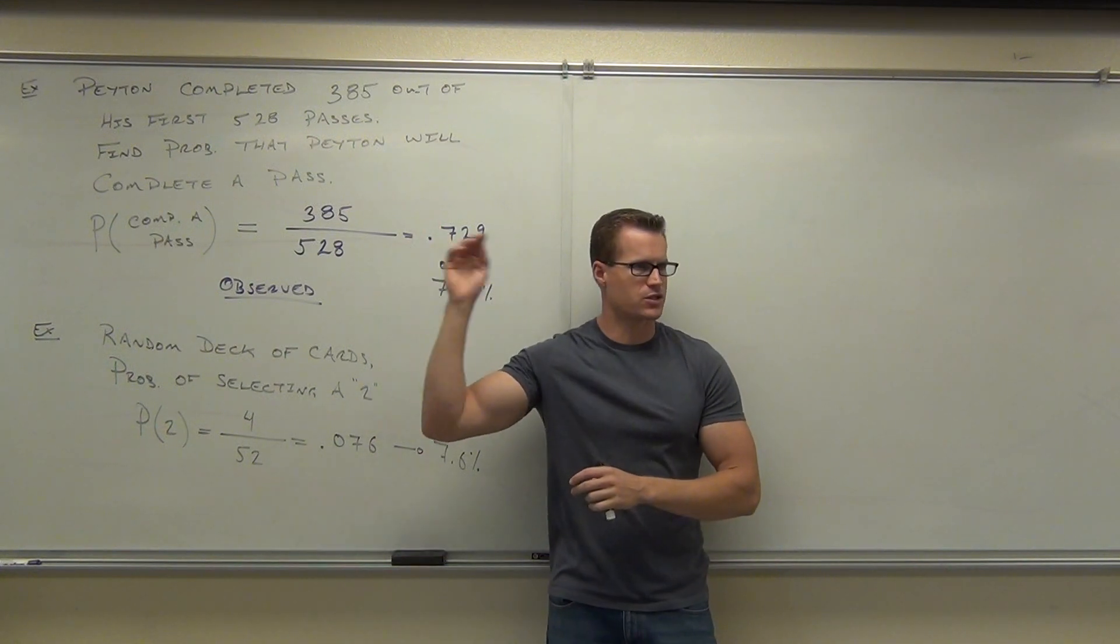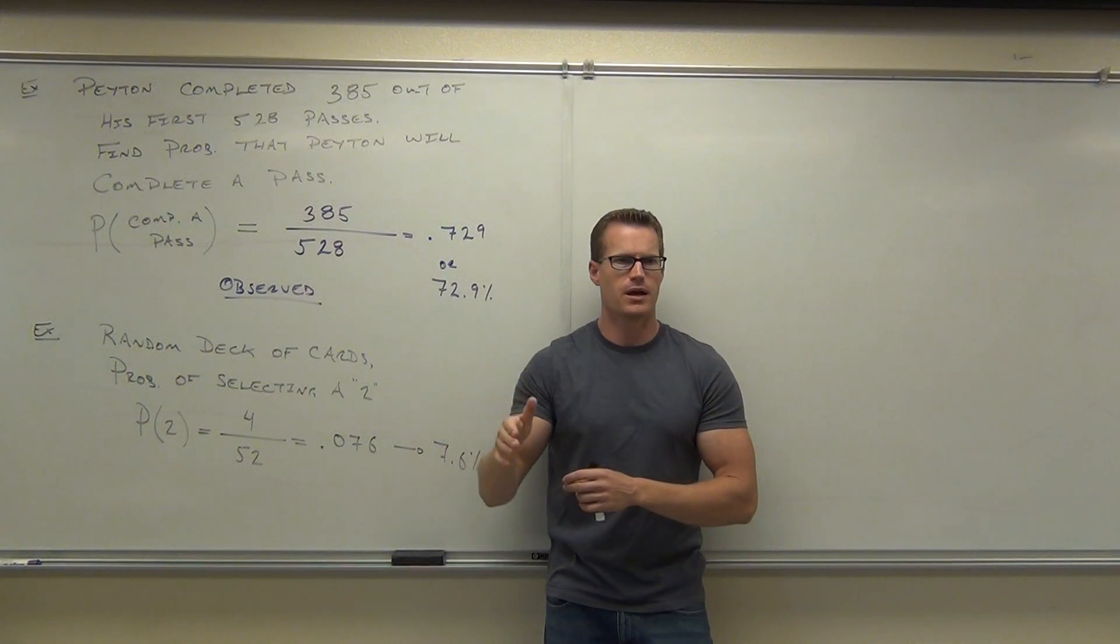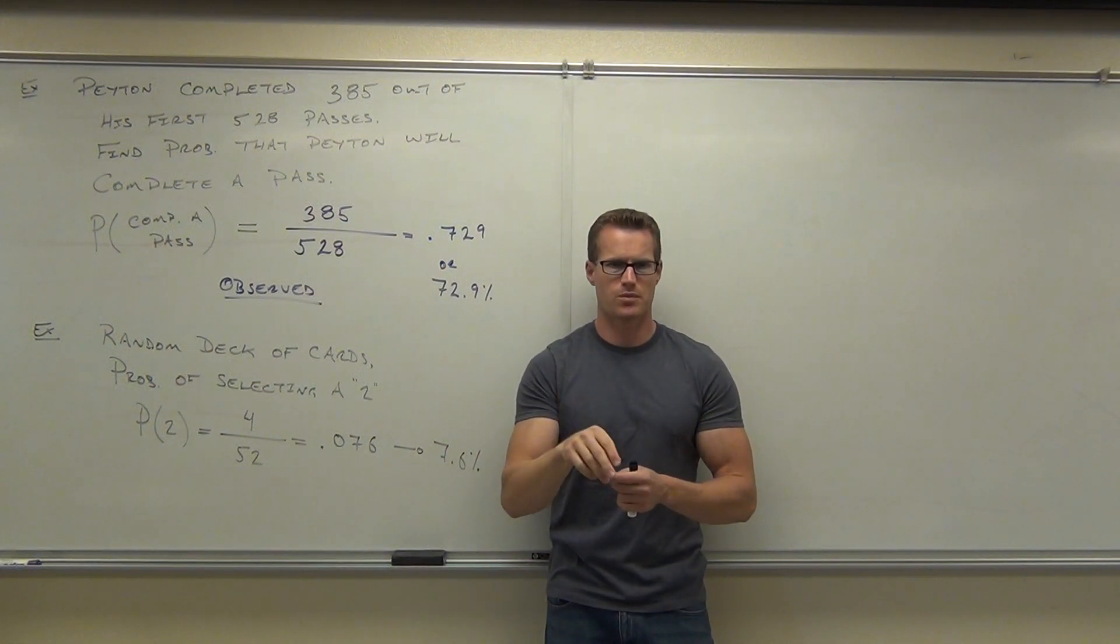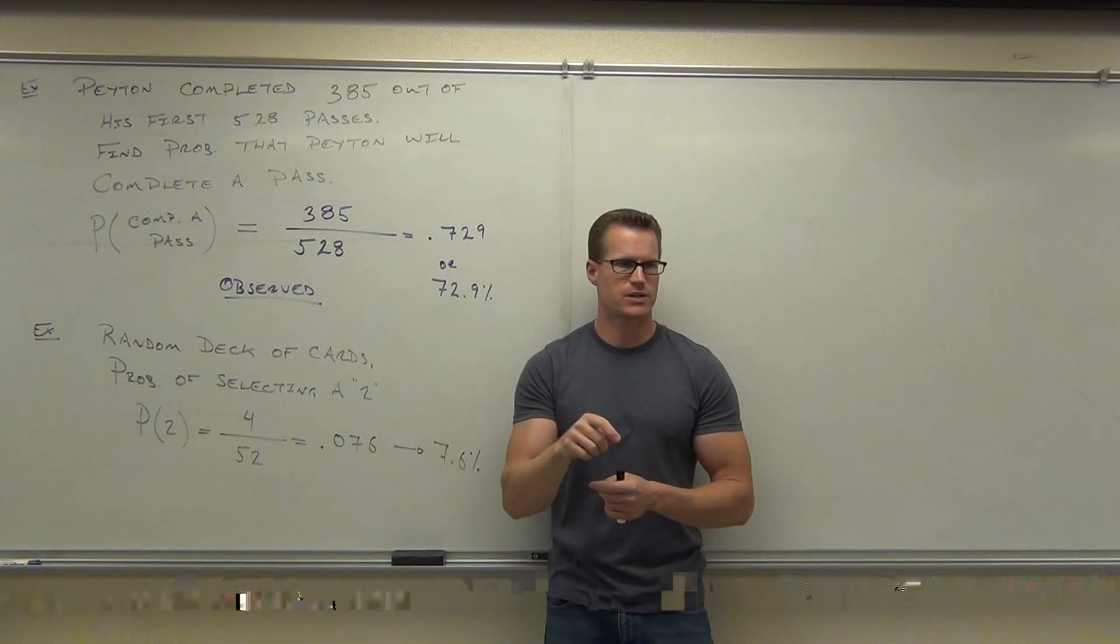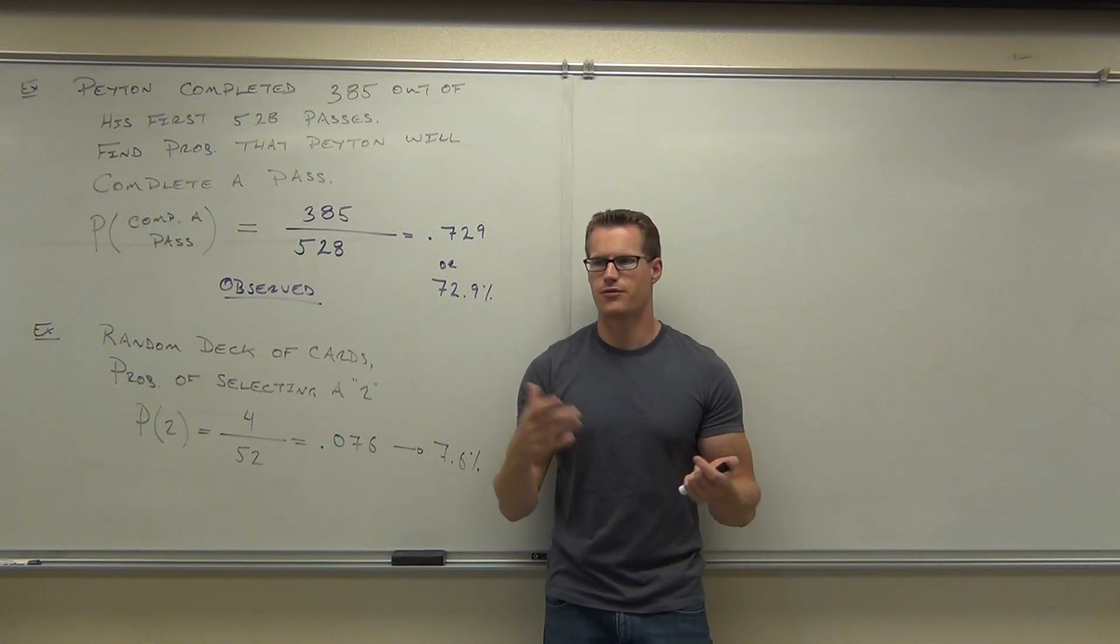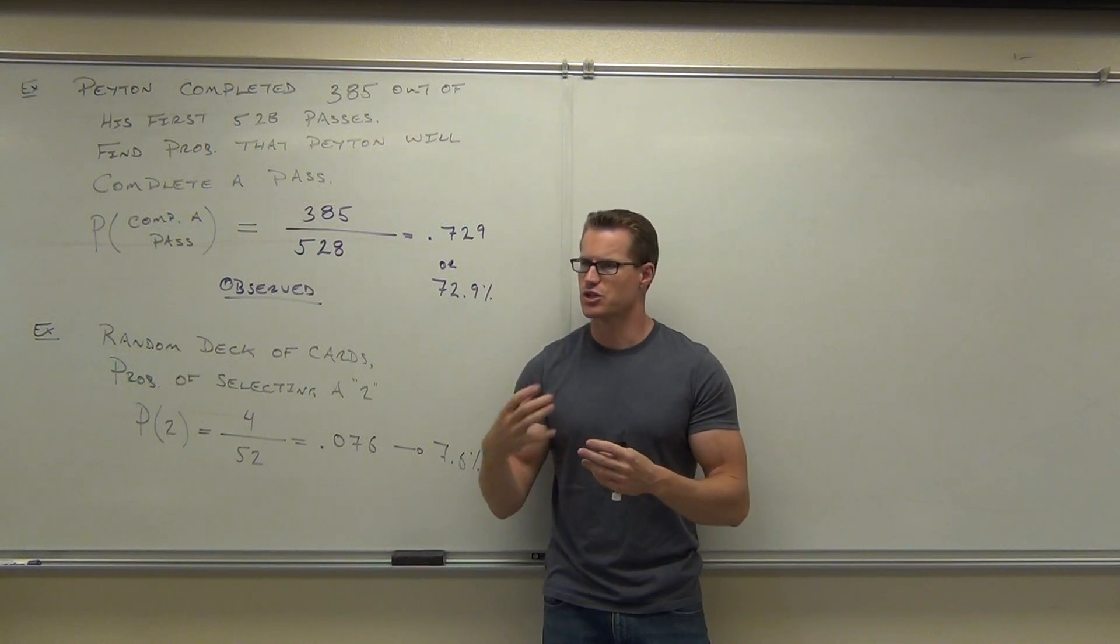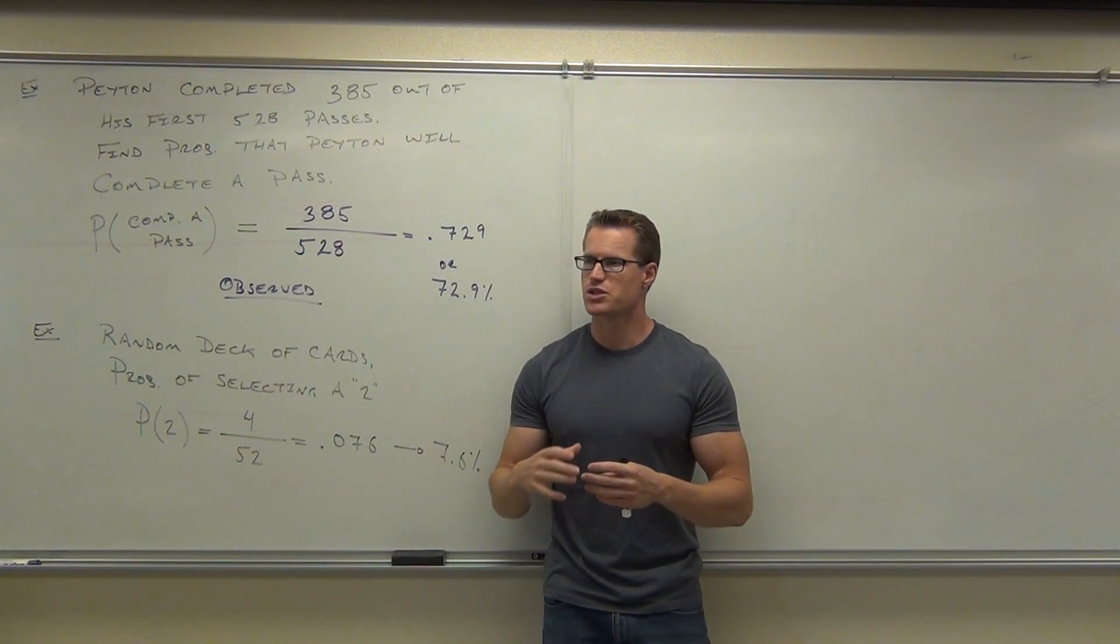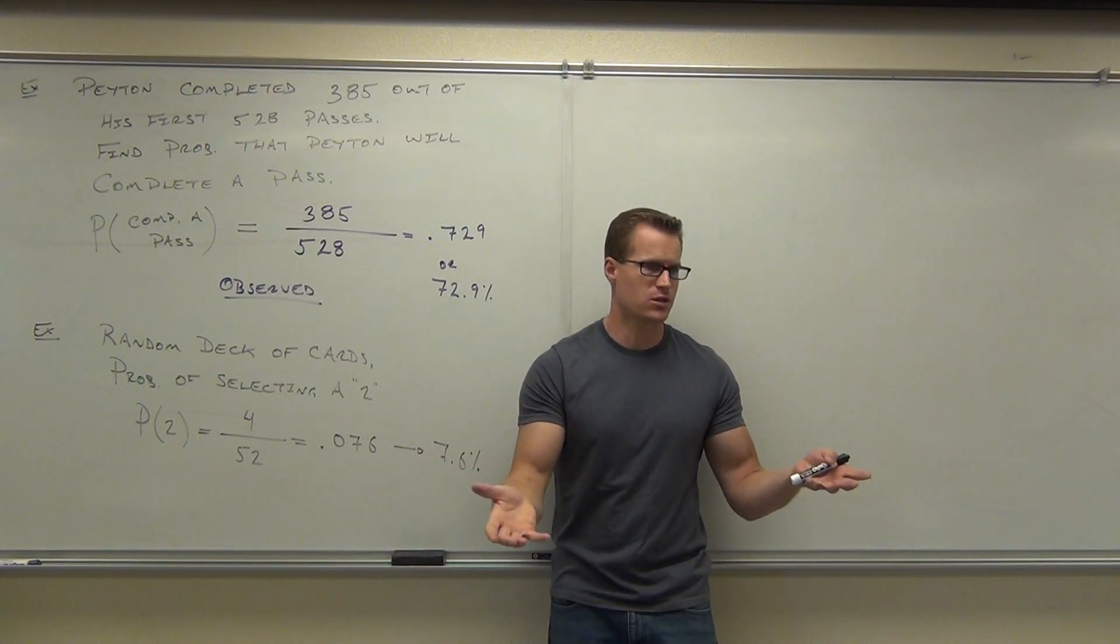It's not like Peyton Manning, right? He actually threw the ball and you calculated that. You didn't say, I drew a card out and put it back 83 times. And out of those 83 times, 21 of them were twos or five of them were twos. You didn't actually do a procedure here. You just calculated what should happen in the procedure.